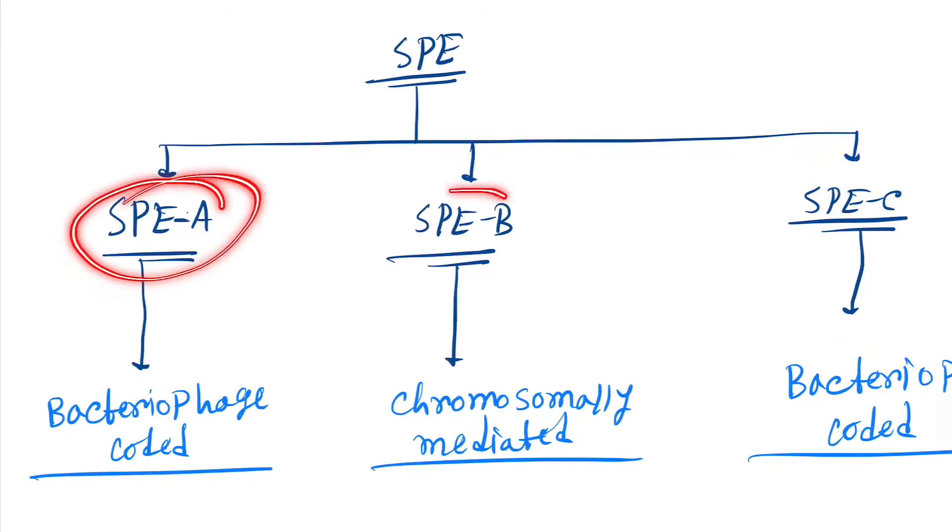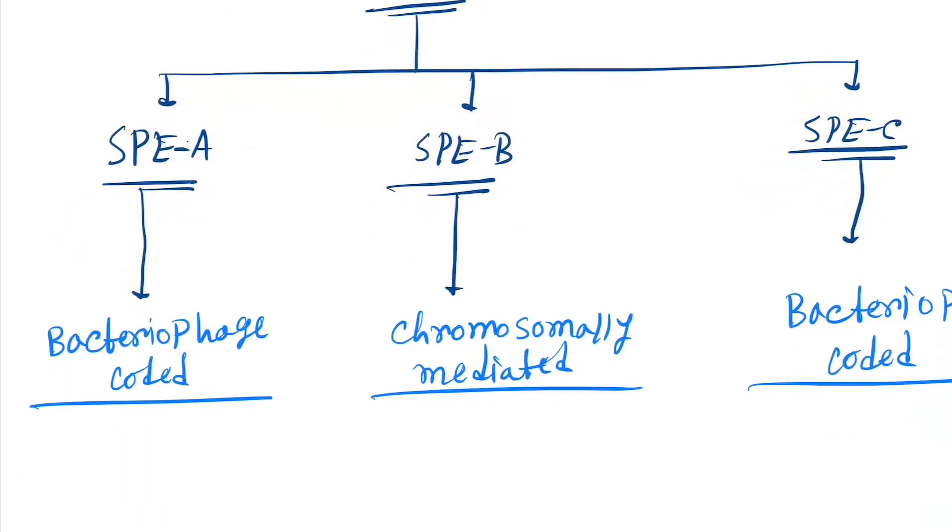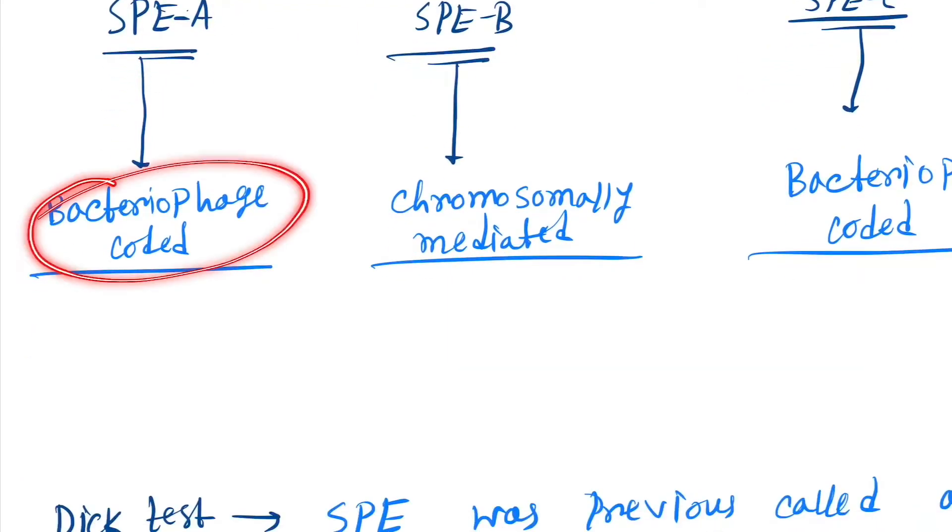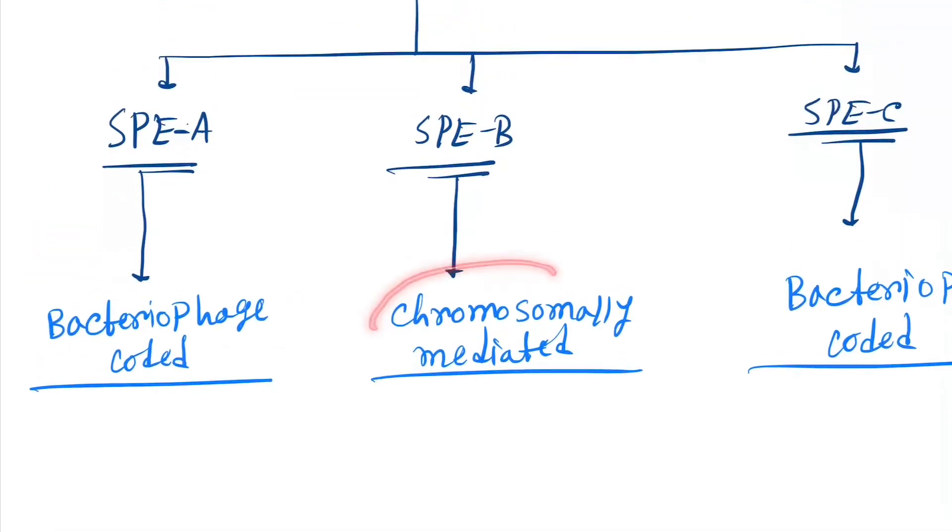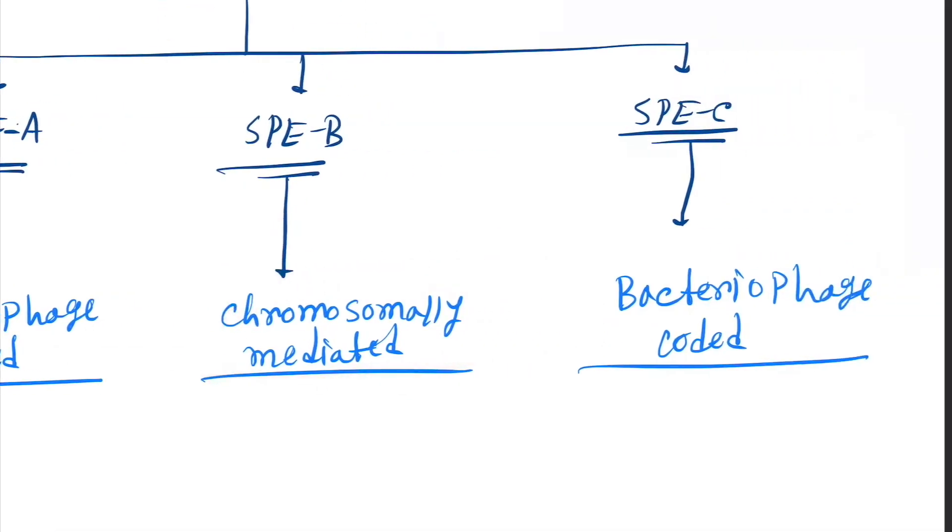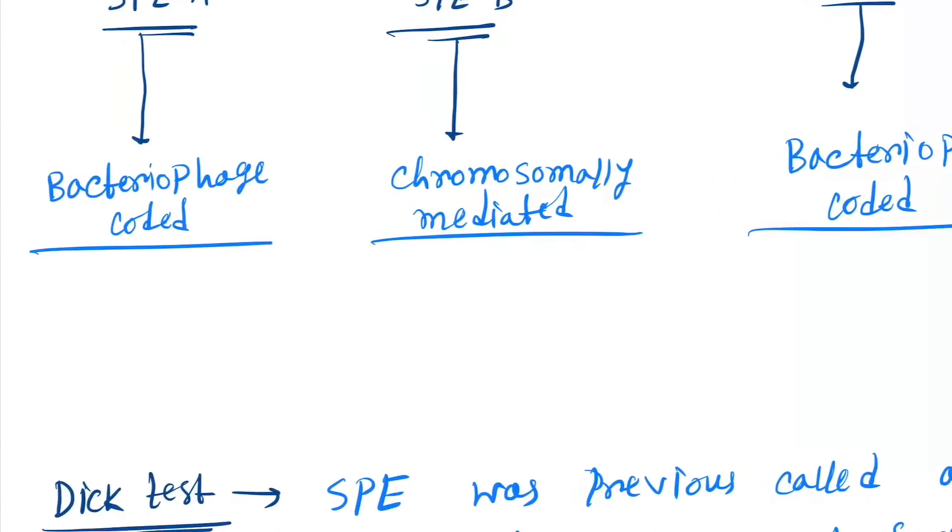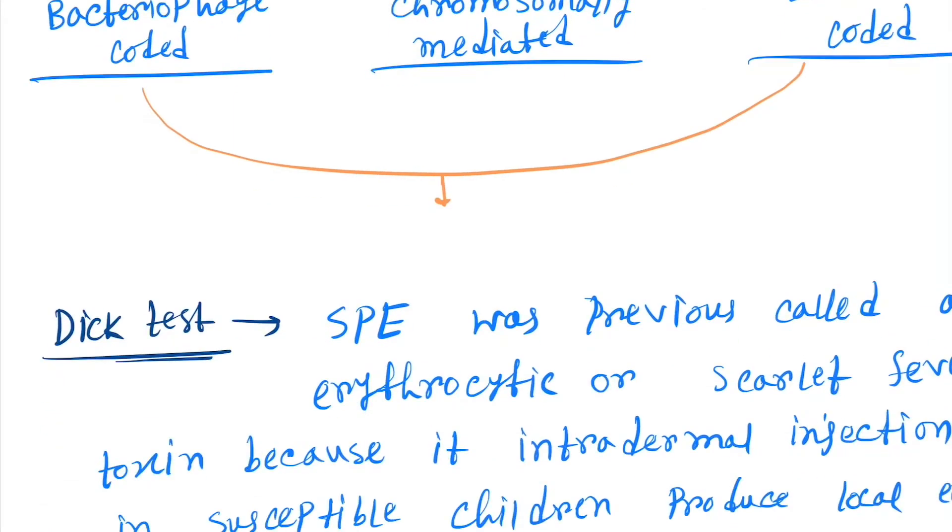SPE, there are three: SPE-A, SPE-B, SPE-C. SPE-A is encoded by bacteriophage, SPE-B is chromosomally mediated, SPE-C is also bacteriophage encoded. These two are superantigens which cause extreme release of interleukins.